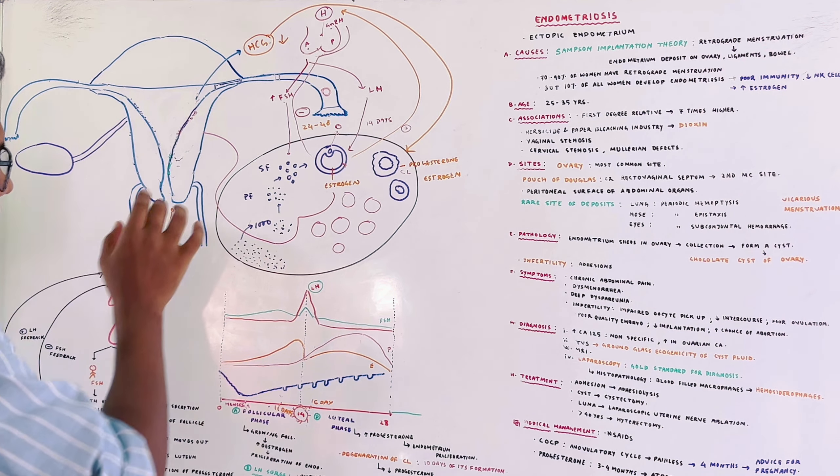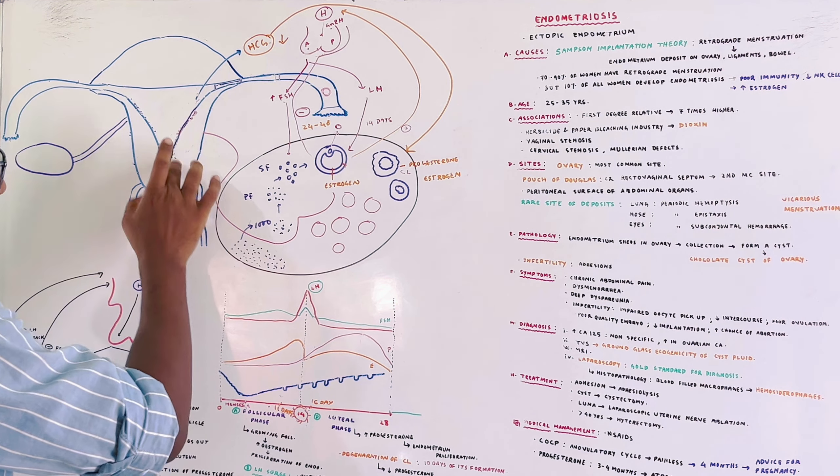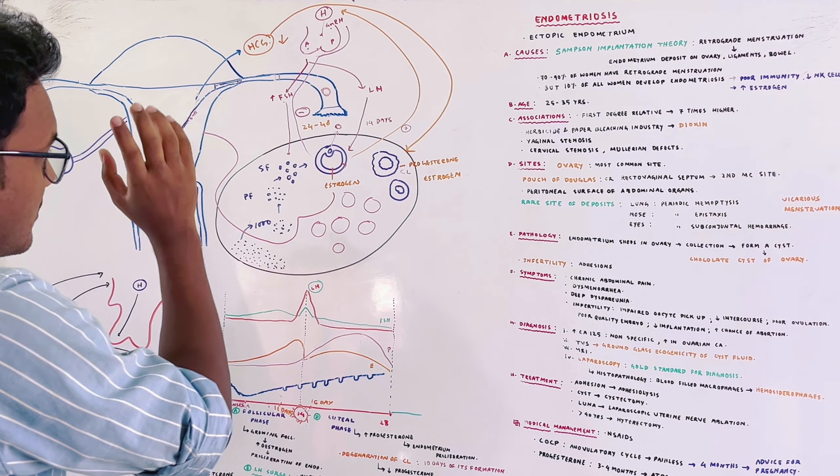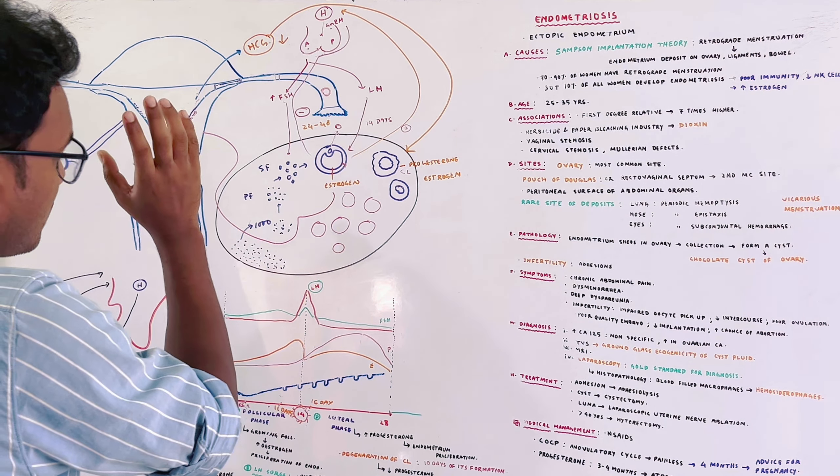Today I am going to talk about endometriosis. When we talk about uterus structure, we have to talk about endometriosis, myometriosis, and perimetriosis.